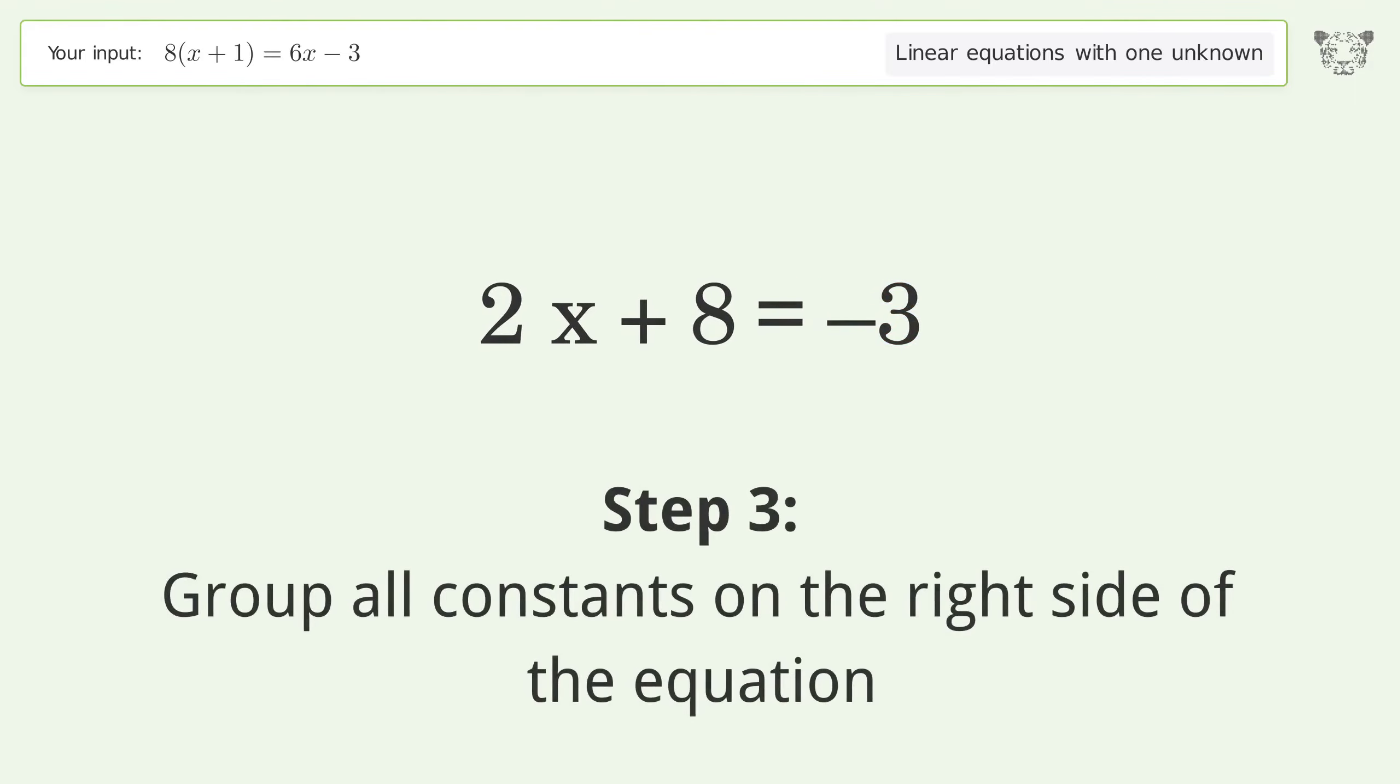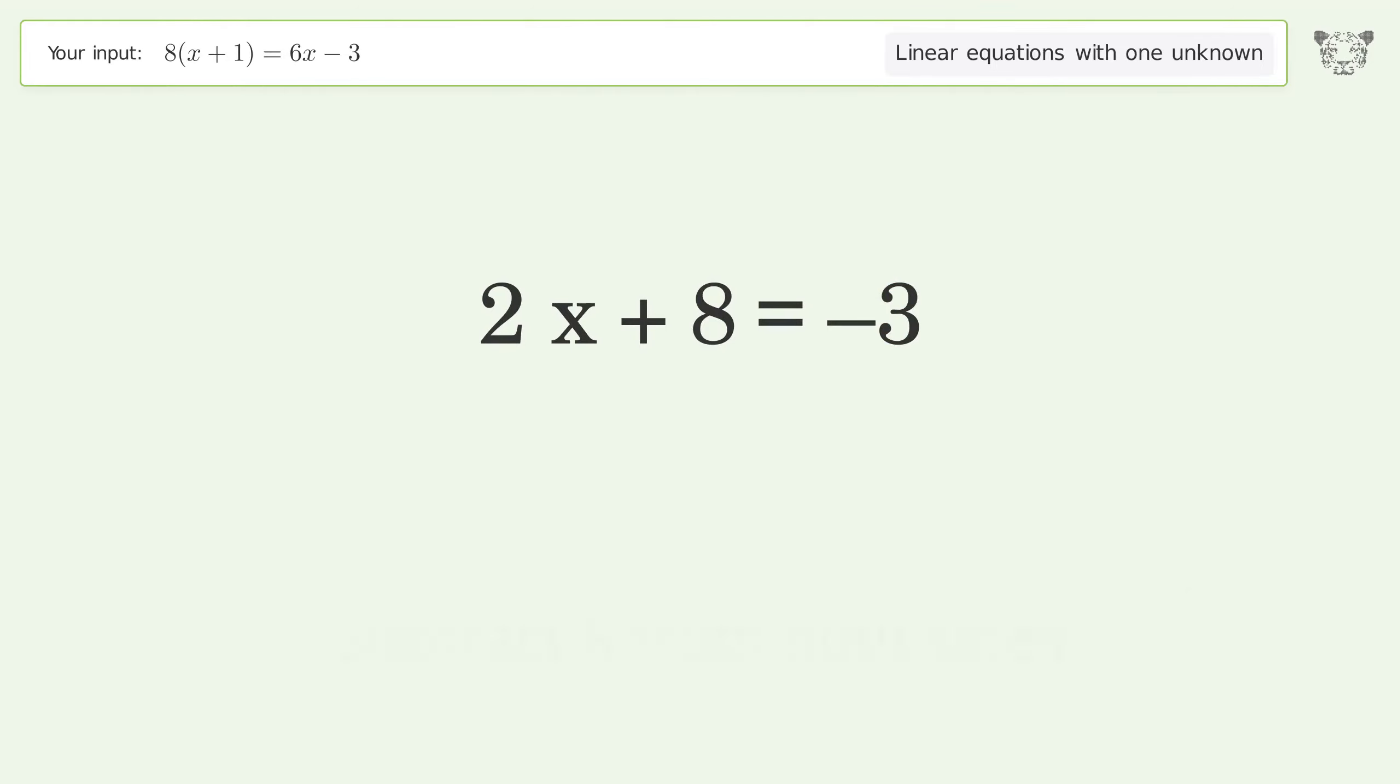Group all constants on the right side of the equation. Subtract 8 from both sides, simplify the arithmetic.